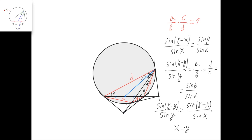Hence, for any triangle, if we drop the simmedian and intersect it with the circumcircle of the triangle, the resulting quadrilateral is always harmonic. And the other way around: if we have a harmonic quadrilateral, then this diagonal is definitely the simmedian of the corresponding triangle.